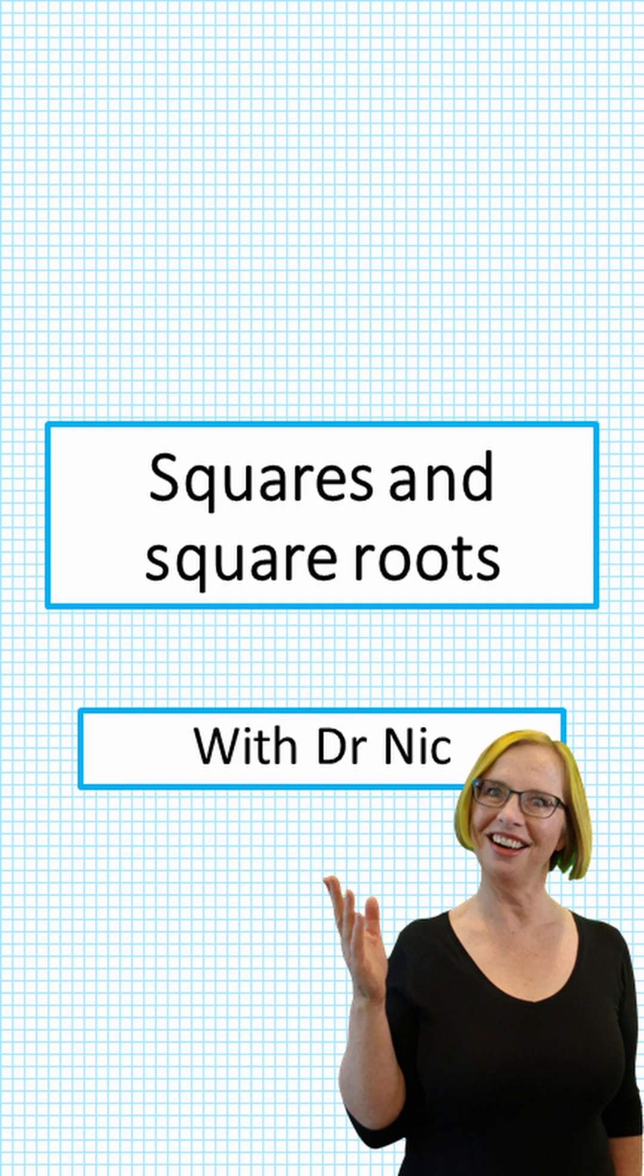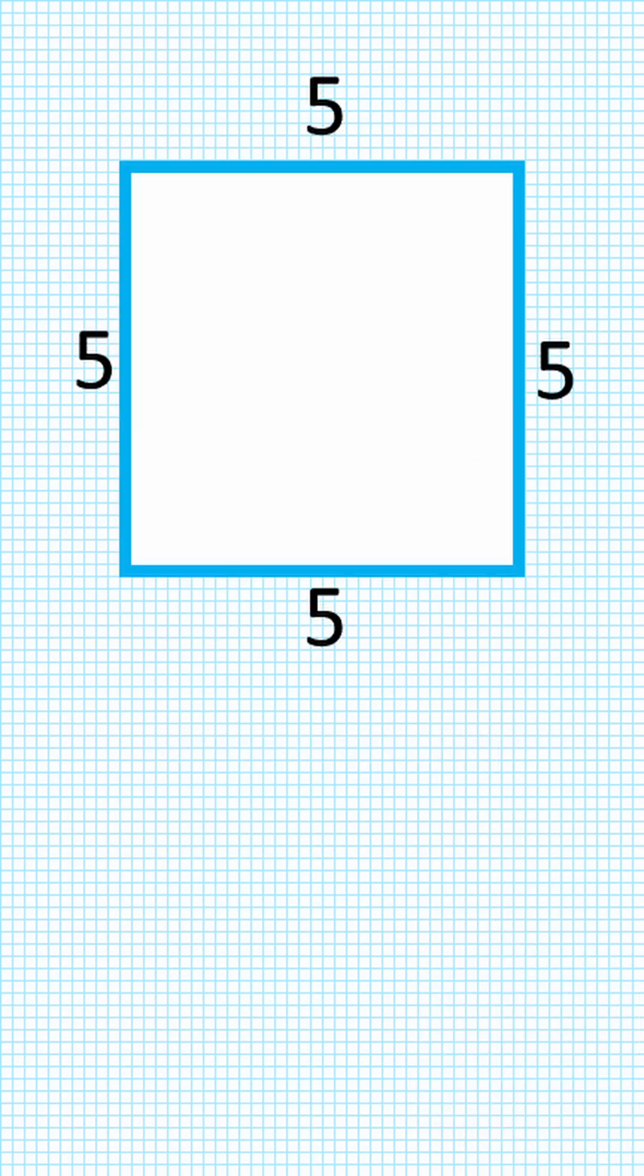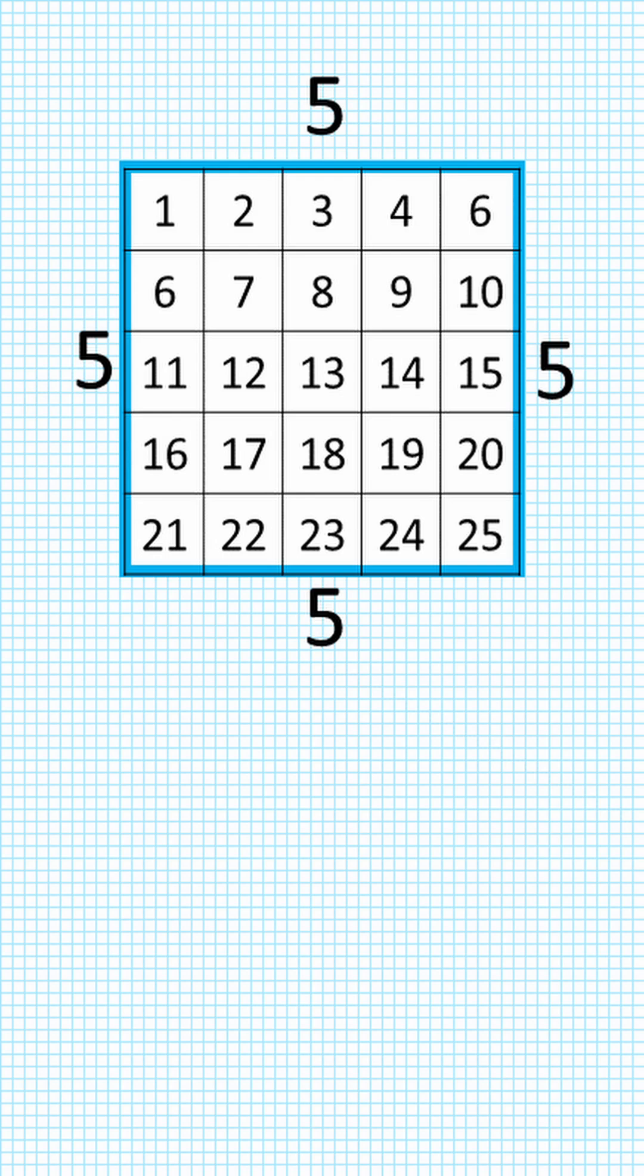Squares and square roots with Dr Nick. Hi. A square is a four-sided object with right angles where the four sides are all the same, and when we find the area of a square we multiply the two dimensions.